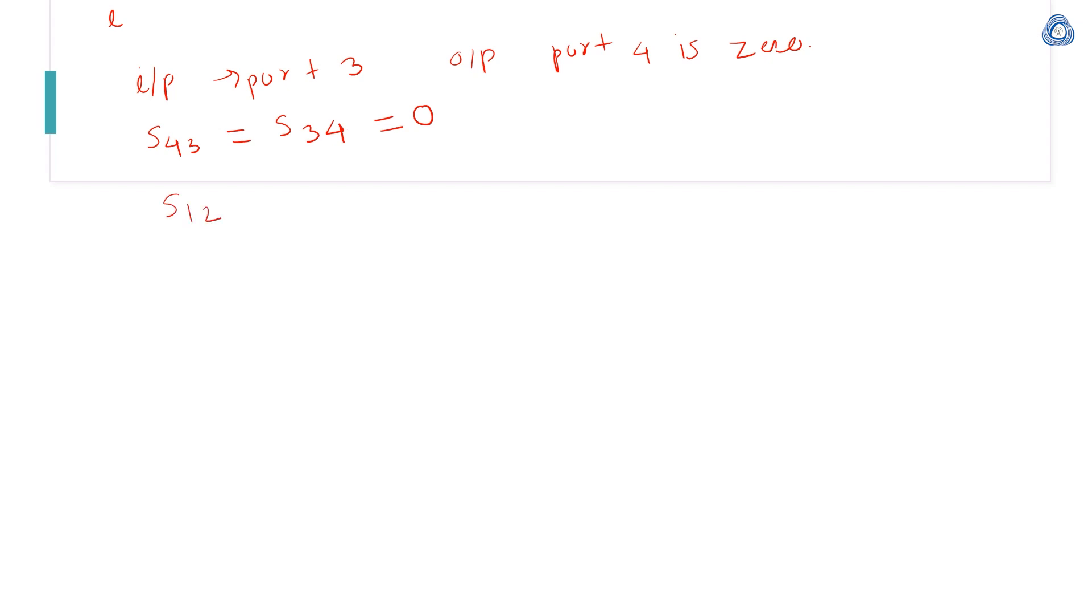Because of this, our scattering matrix for magic T becomes simplified. For an ideal magic T, there is no back reflection. That's why S11 is 0, S22 is 0, S33 is 0, and S44 is 0. The remaining elements are S13, S14, S23, and S24.